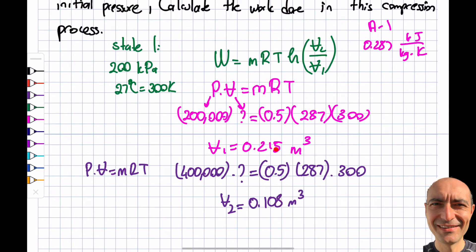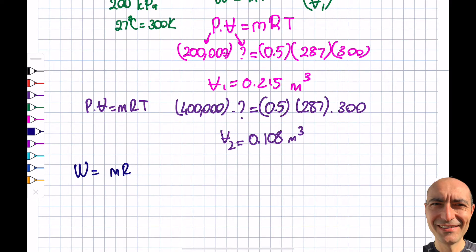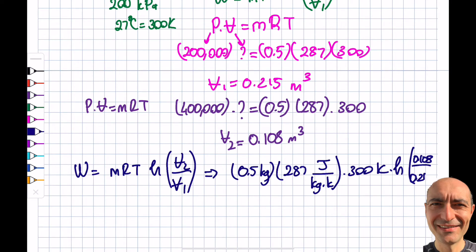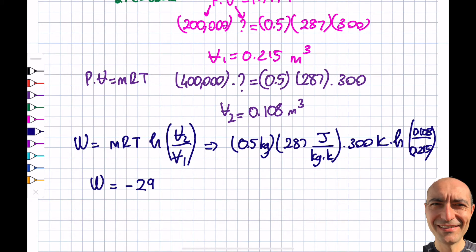Then I proceed with plugging this into my calculator: W = mRT ln(V2/V1). That's going to be 0.5 kilograms, R is 287 joule per kilogram Kelvin, T is 300 Kelvin, and then this is going to be ln of (0.108/0.215). When I punch this into my calculator, I will get my answer to be -29,840 joules, or I prefer to write in kilojoules, -29.84 kJ.